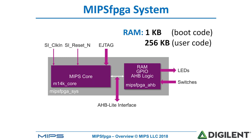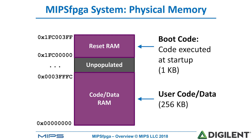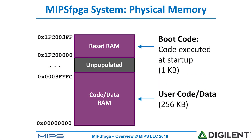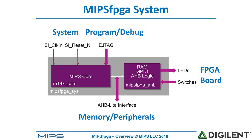Here's a figure of the MIPS FPGA system. It includes the core on the left and some peripherals and memory on the right. The system has one kilobyte of boot code space and 256 kilobytes of space for user code. Looking at the physical memory map, the boot code starts at physical address hex 1FC00000 — the address of the first instruction fetched upon reset. The user code space starts at physical address hex 0. The HB light interface allows us to interface with these peripherals as well as memory.